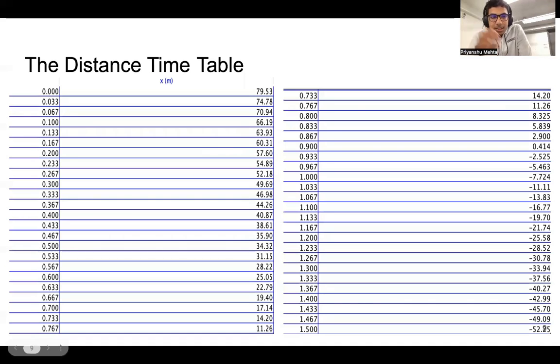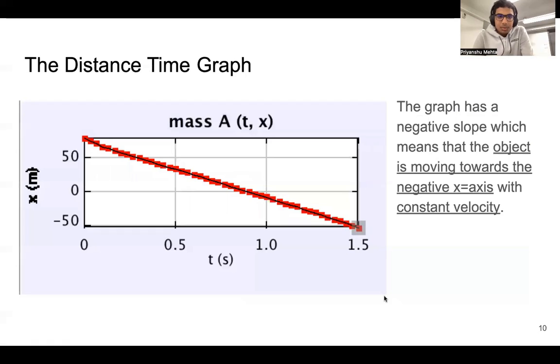This is the distance-time table which shows that the object's initial position is 79.53 centimeters while its final position is negative 52.25 centimeters. This slide basically tells us that we have a negative constant velocity.